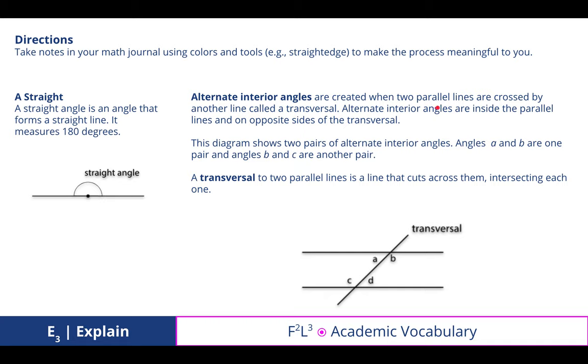Alternate interior angles are created when two parallel lines are crossed by another line called a transversal. Alternate interior angles are inside the parallel lines and on opposite sides of the transversal. This diagram shows two pairs of alternate interior angles. Angles A and B are one pair, and angles B and C are another pair. A transversal to two parallel lines is a line that cuts across them, intersecting each one. Remember that we also talked about same-side interior. Those add up to 180, and corresponding sides of a transversal are congruent.